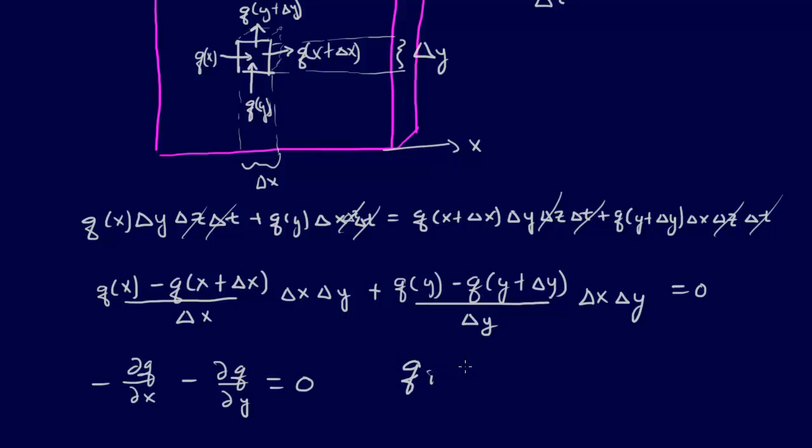It says qi equals minus k rho c partial of T. And it's temperature with respect to i, where i is whatever variable that we're dealing with. And so we're going to just plug this in for each of our q's.